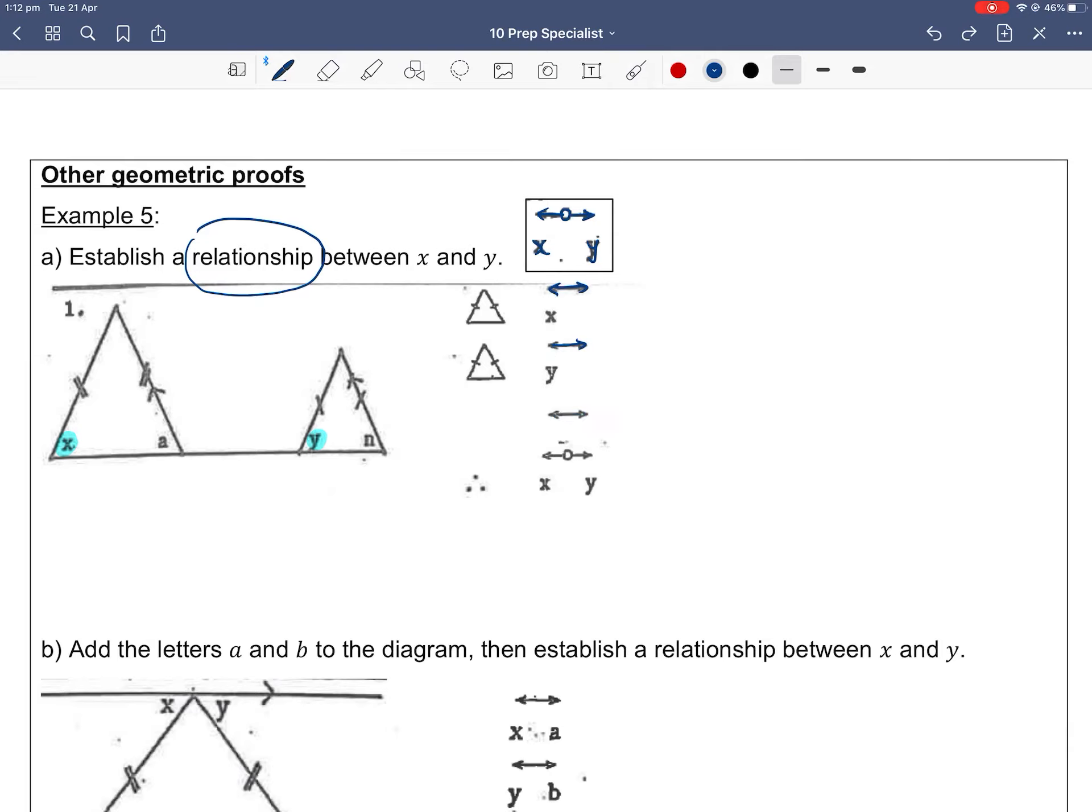They're saying that step one, find a relationship between x and something using isosceles triangle, and then step three, find a relationship between two things using some reasoning, and then step four, lastly, because of that reasoning we can therefore establish a relationship between x and y.